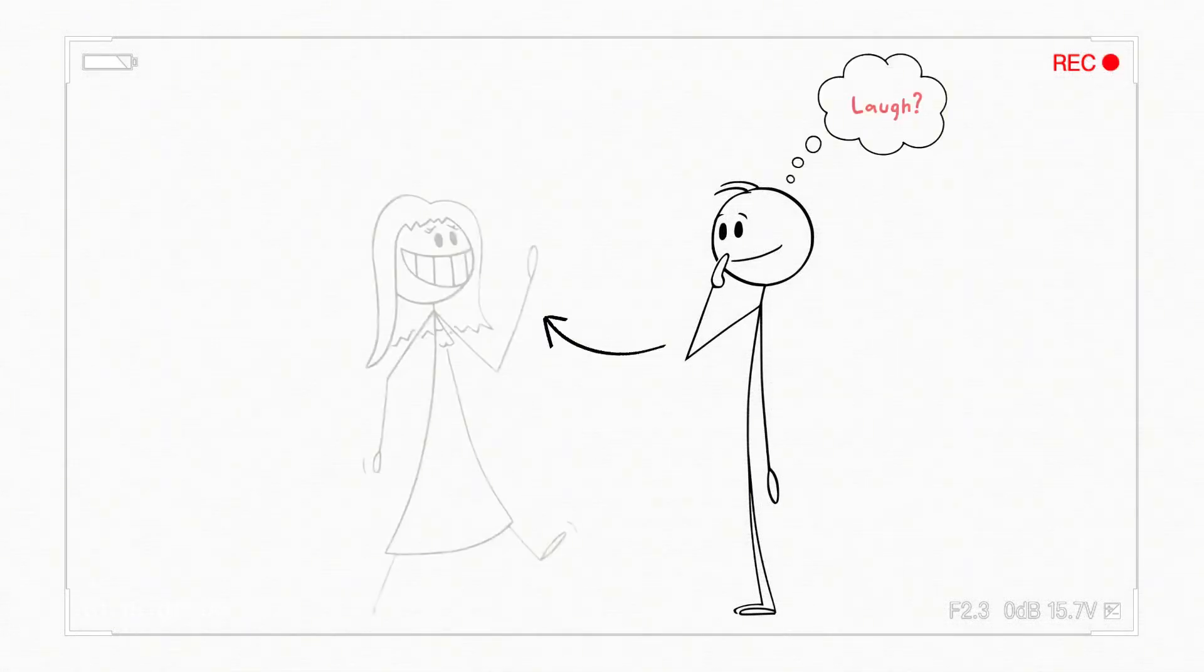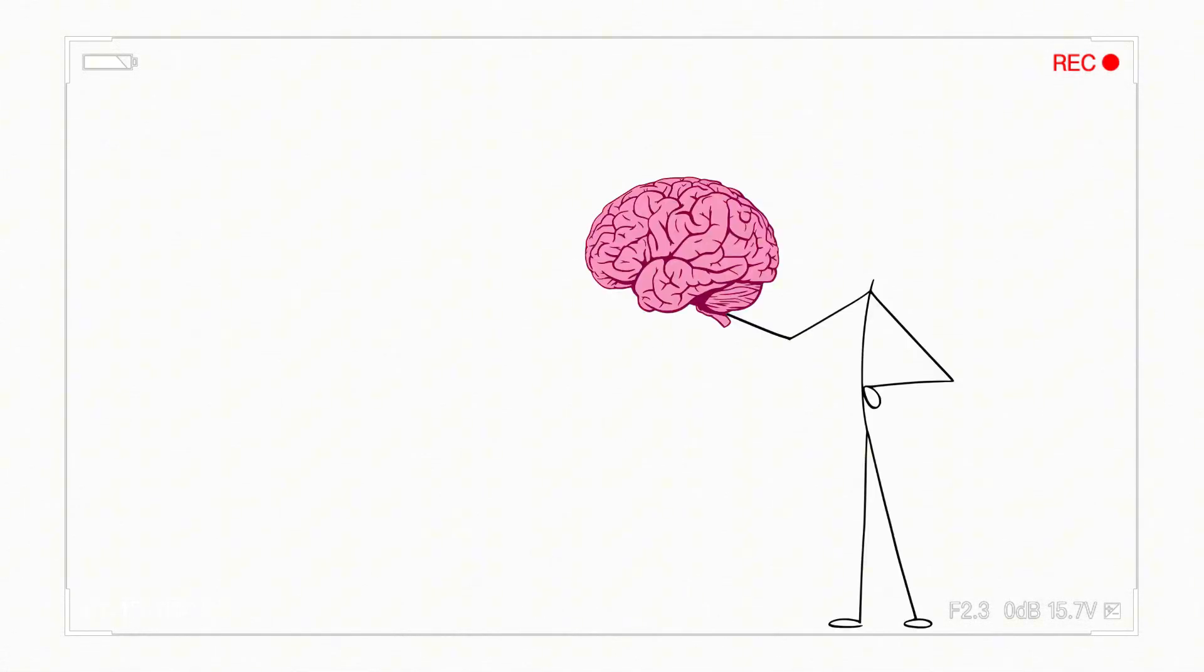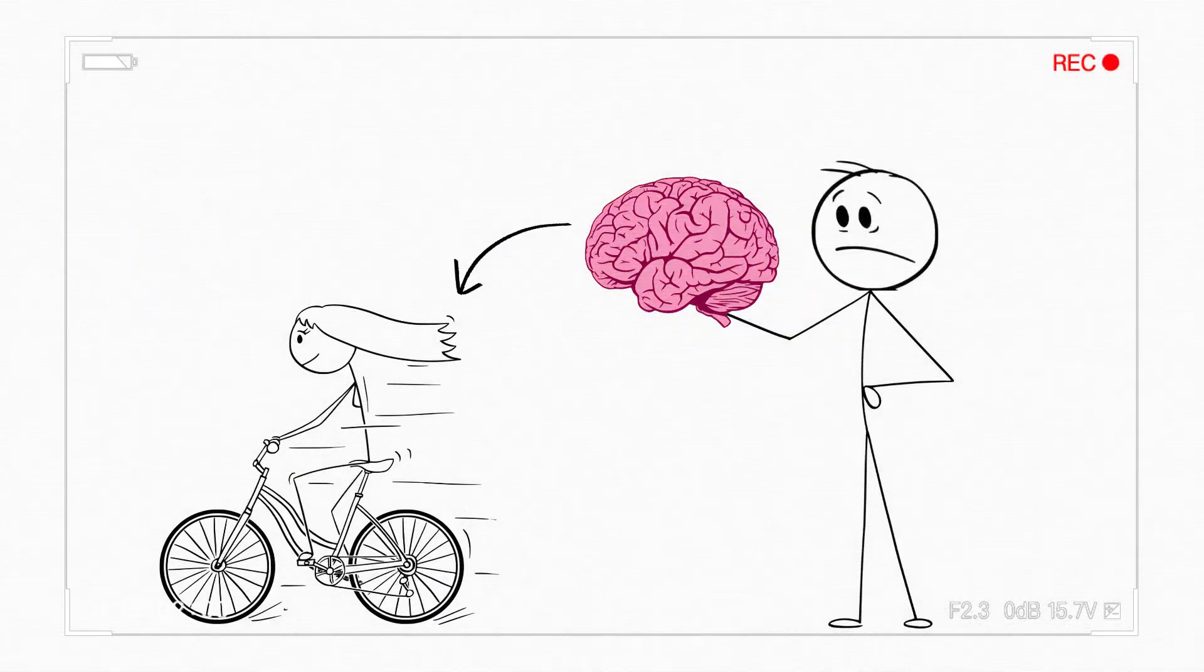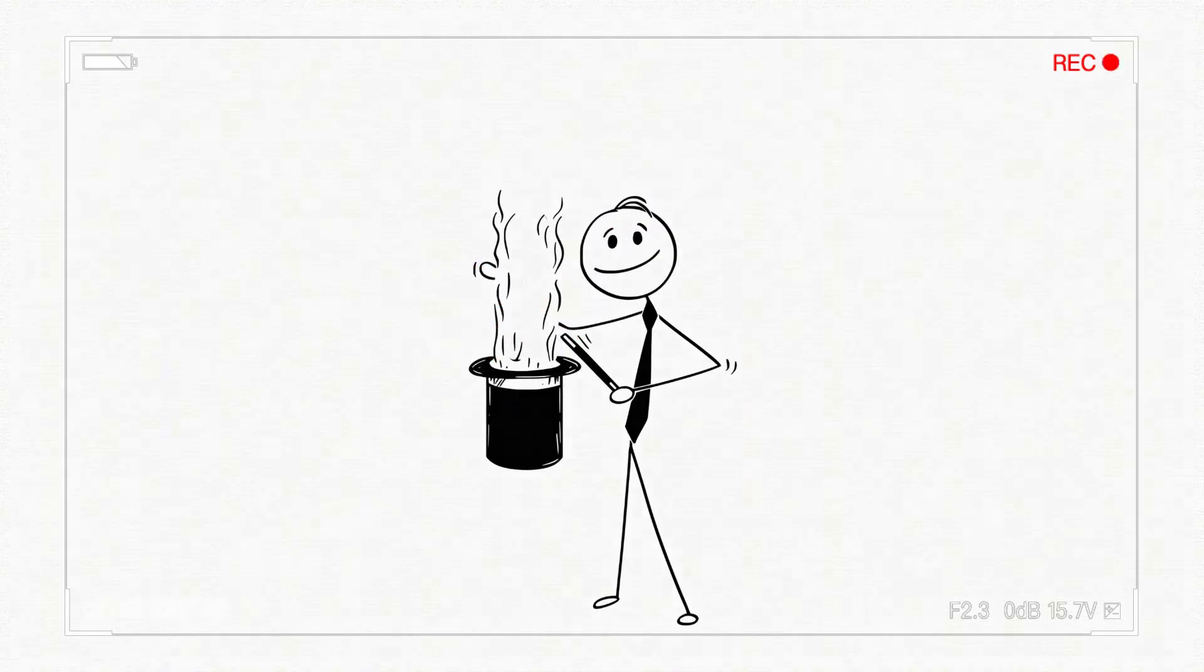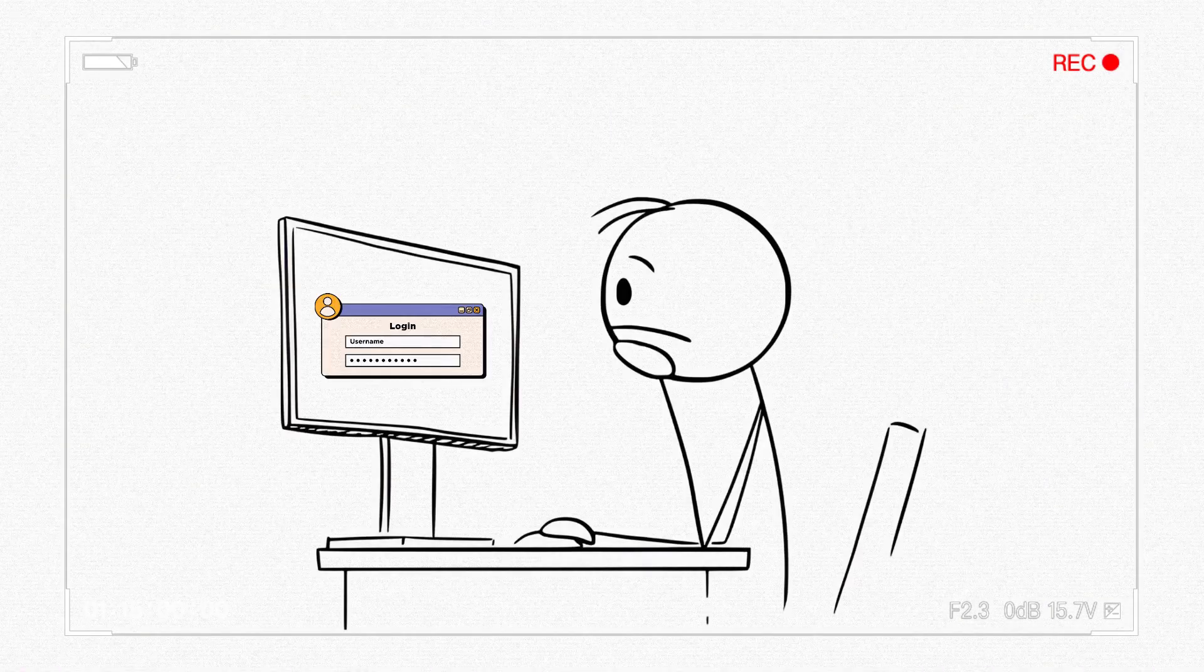Ever caught feelings for someone and thought, wait, why them? Was it their laugh, their look, their vibe? What if I told you, your brain picked your crush before you even realized it? And no, it's not magic, it's neuroscience. Today, we're diving into how your brain secretly picks who you fall for and how you can hack that system.